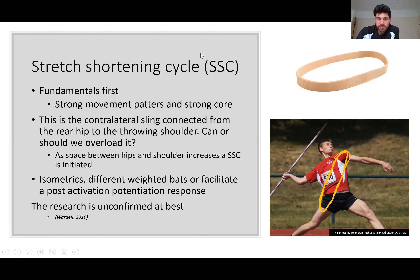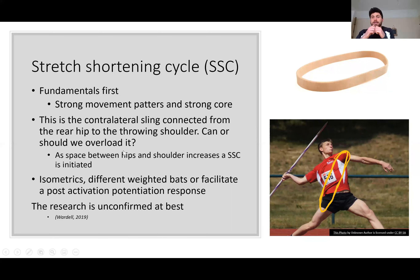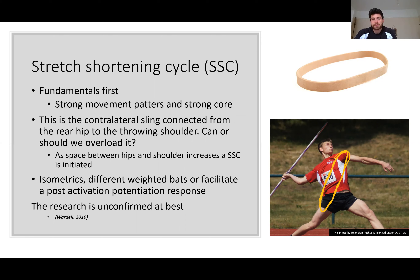At the end of power I would include the stretch shortening cycle — but I wouldn't move to this before getting the fundamentals nailed, and the research isn't completely consistent. What you want to imagine is an elastic band from the shoulder to the pelvis — if we can move the hip further back, it increases the stretch shortening cycle, which works like an elastic band: the faster you fire it, the faster the band is going to go. The questions are: could we use isometrics, different weighted bats, and throwing med balls before hitting cricket balls to create a post-activation potentiation response? The research is unconfirmed at best.